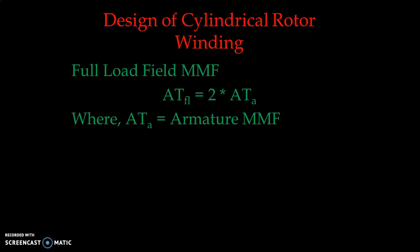The armature MMF (ATa) is calculated as 2.7 × I_phase × T_phase × Kw / P, where I_phase is the phase current, T_phase is the number of turns per phase, Kw is the stator winding factor, and P is the number of poles. For a synchronous alternator the stator winding design remains common whether it is a salient pole or a smooth cylindrical type of rotor construction.